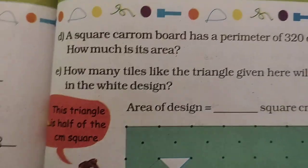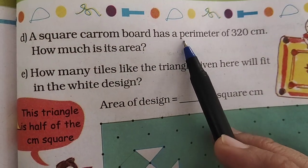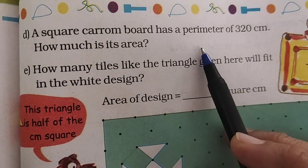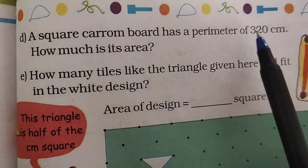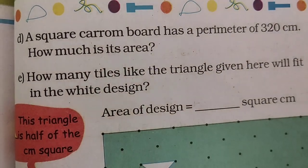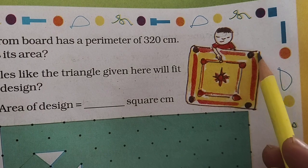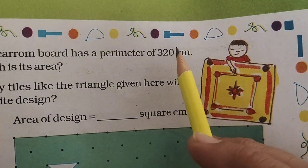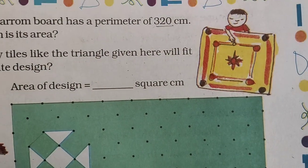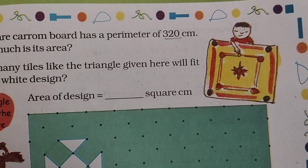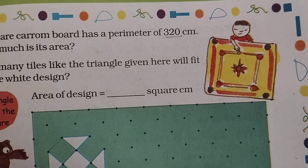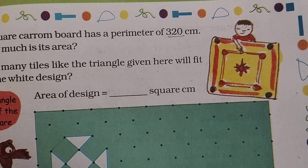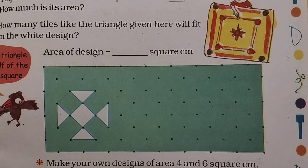Now let's see sum D. A square carom board has a perimeter of 320 centimeters. How much is its area? The perimeter is given as 320. We are supposed to find out the area. All the sides of a square have the same measure, so by finding one side we can find the area of the square.